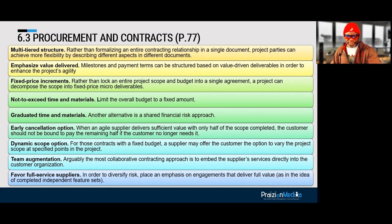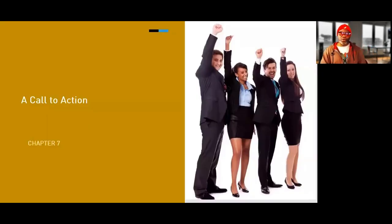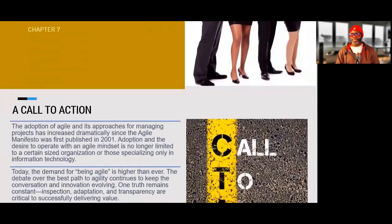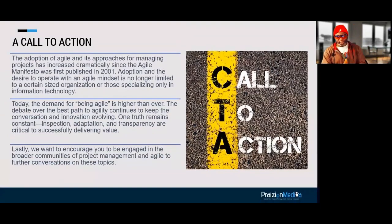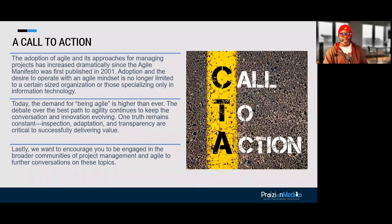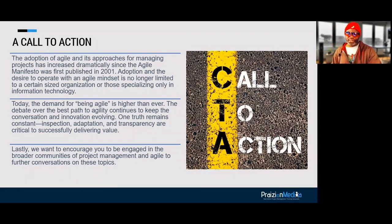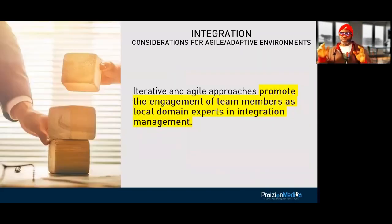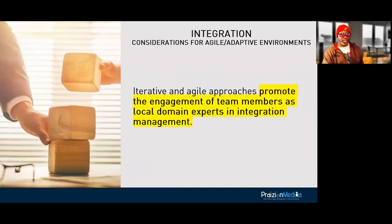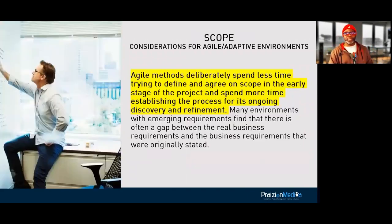Chapter seven is called a call to action, where PMI says they want to encourage you to be engaged in the broader communities of project management and Agile to further conversations. After that, we go into detail on what makes integration what it is in Agile — the team being the integrators. On scope: we spend less time trying to define and agree on scope early; instead, we want a process for its ongoing discovery.